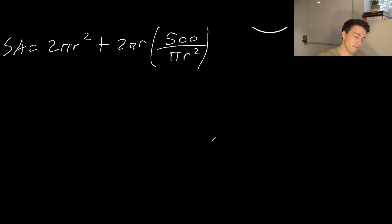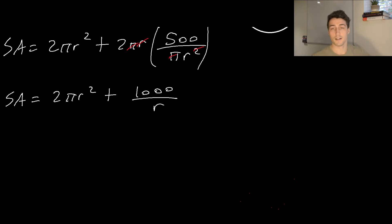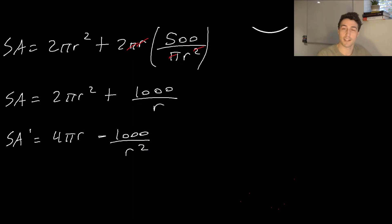Simplifying, pi and r cancel in the numerator and denominator, so the surface area becomes 2 pi r squared plus 1,000 over r. Now I'm going to take the derivative: SA prime equals 4 pi r minus 1,000 over r squared. And now I can set it to zero.